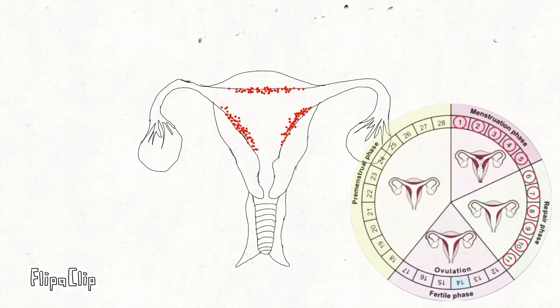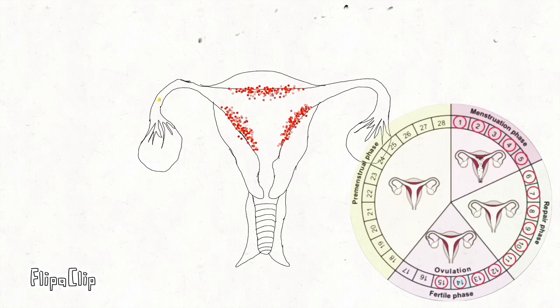Day 12 to 17 is called the fertile phase. During this phase, the uterine lining continues to thicken and fertilization is likely to occur if sperms are present. On day 14, an ovum is released from one of the ovaries and then gradually moves towards the fallopian tube.